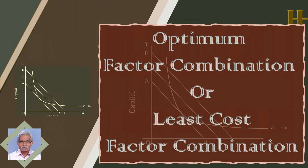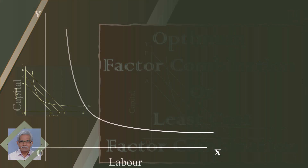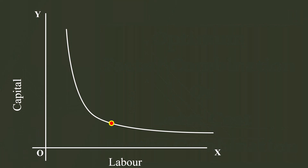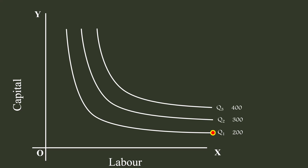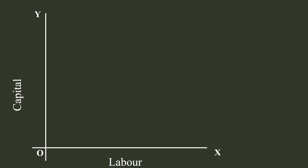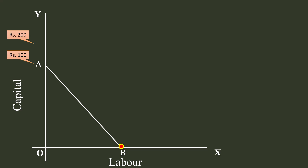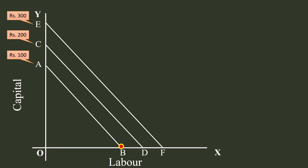Optimum Factor Combination. Combinations on an isoquant curve produce the same level of output. Each isoquant in the isoquant map represents a specific level of output. The outlay of combinations on the isocost line are the same. Factor prices remaining constant, higher outlays form new isocost lines to the right and parallel to the given isocost curve.